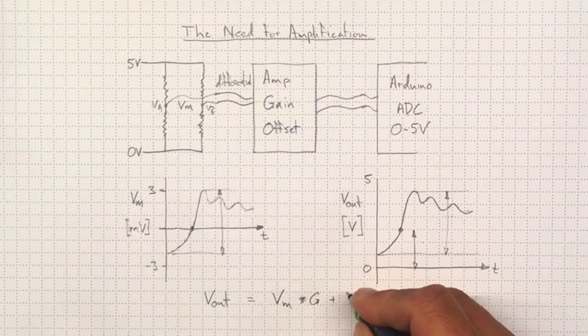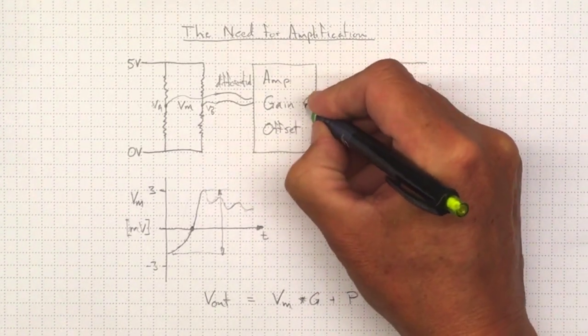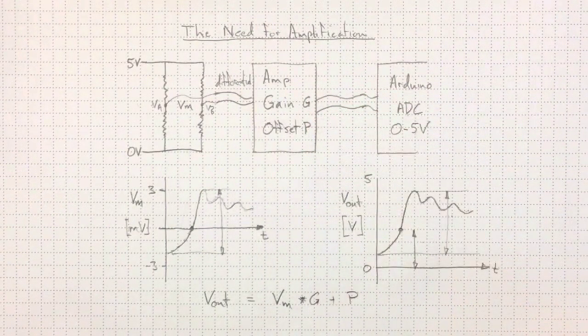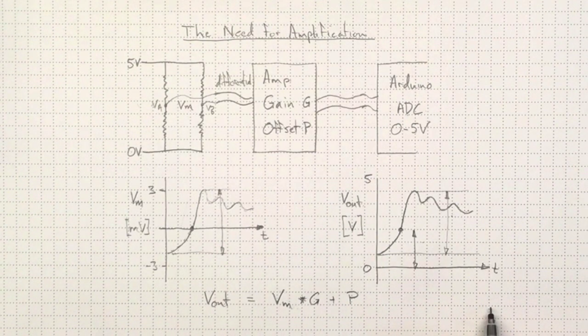So plus some offset P. So a gain of G and an offset of P to push the voltage up. And that's what we'd like to get from our amplification.